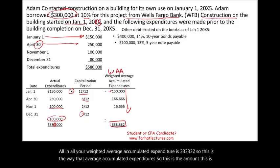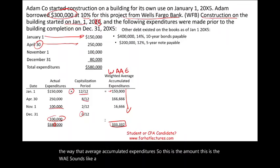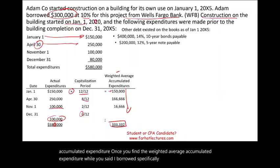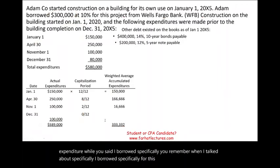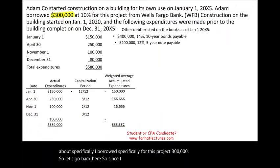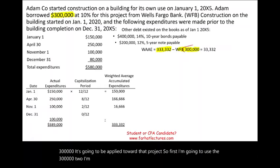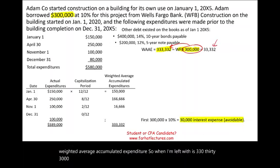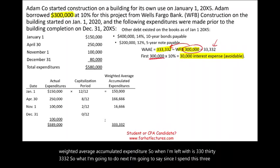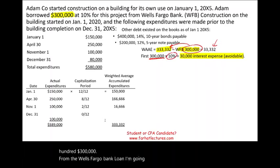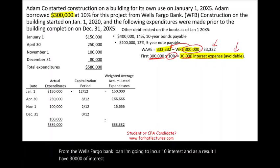This is the WAAE — the Weighted Average Accumulated Expenditure. Once you find it, since I specifically borrowed $300,000 from Wells Fargo for this project, I'm going to apply that $300,000 first toward covering the WAAE. So the first $300,000 of WAAE at 10% gives $30,000 of avoidable interest. This is considered avoidable because if I did not undertake this project, I wouldn't have had to borrow the money and wouldn't have had this interest expense.